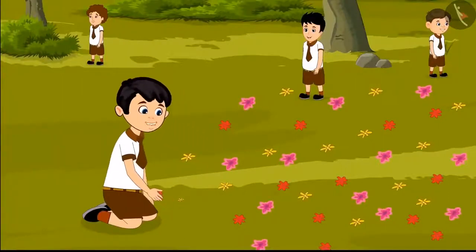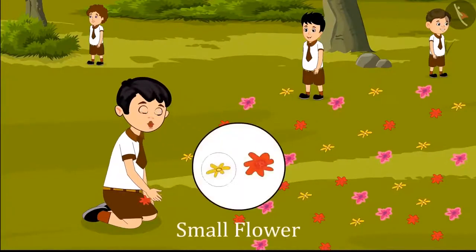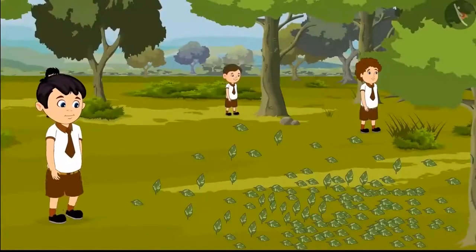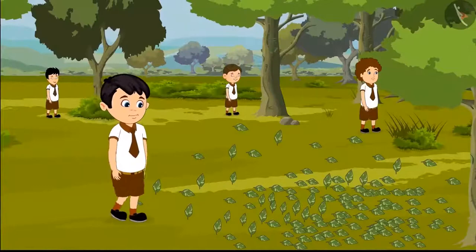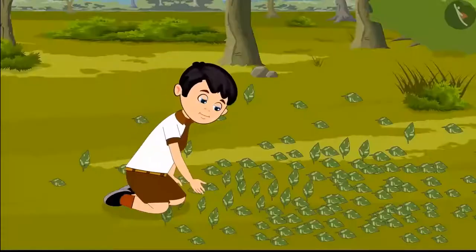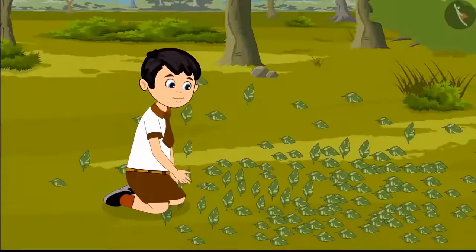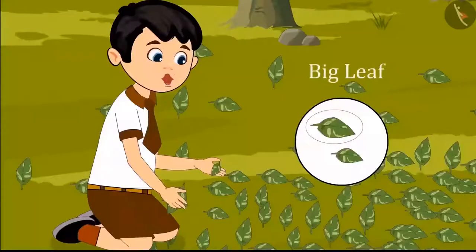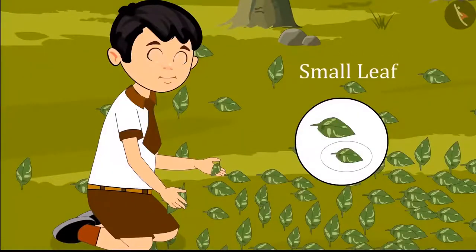These are very beautiful flowers. I will take two flowers — a small flower and a large flower. After going a little further, Chotu saw fallen leaves and picked up two leaves: one big leaf and one small leaf.